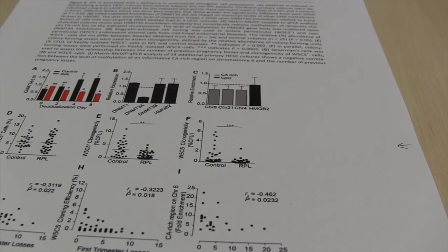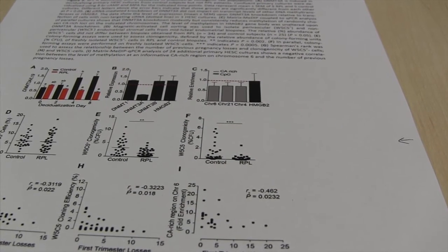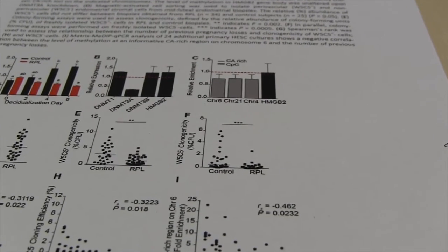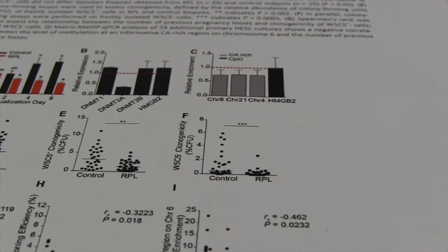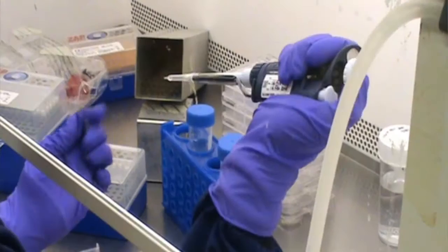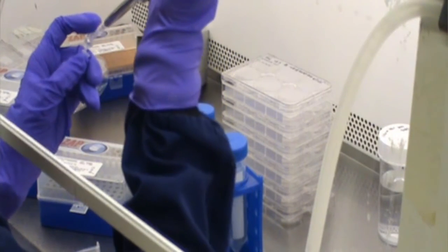We set out to characterize and quantify the abundance of clonogenic cells in the endometrium of control patients and miscarriage patients, analyzing approximately 60 biopsies. What we found was a strong correlation between stem cell deficiency and the number of previous miscarriages in these patients.